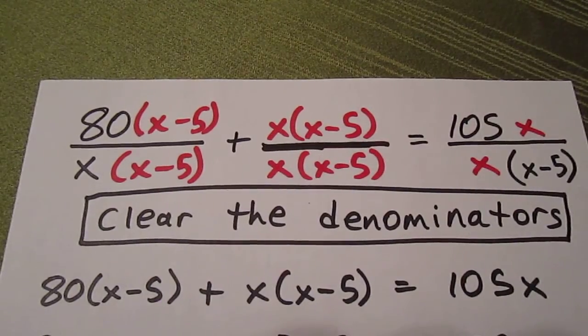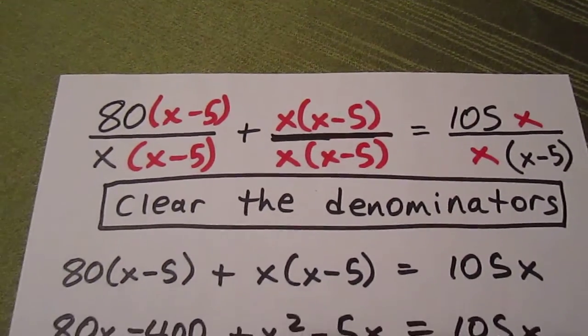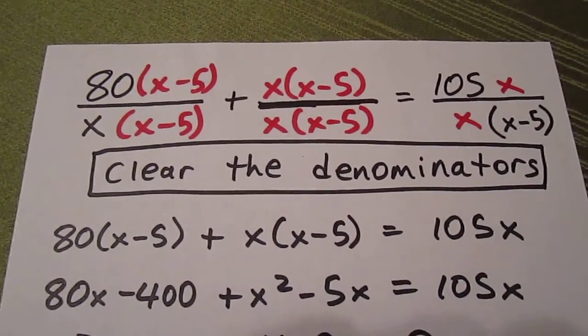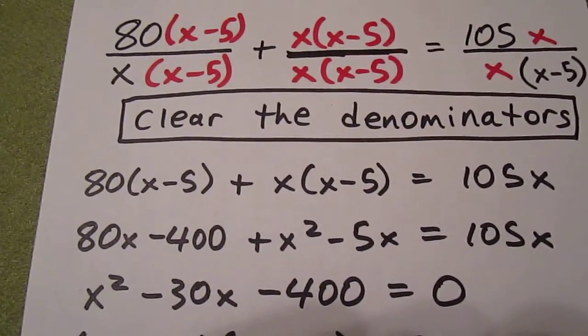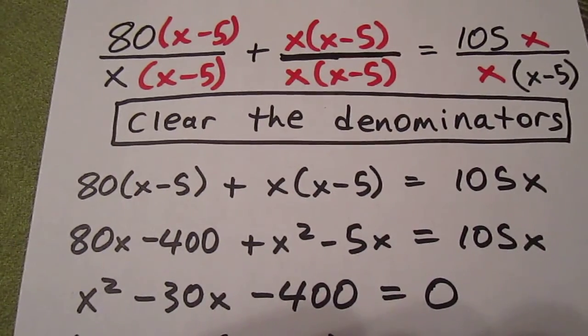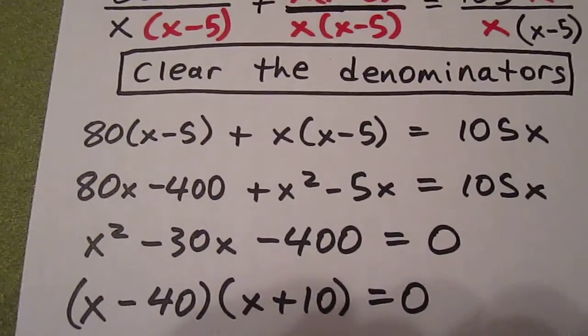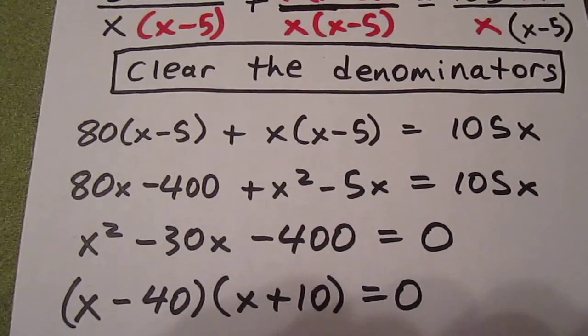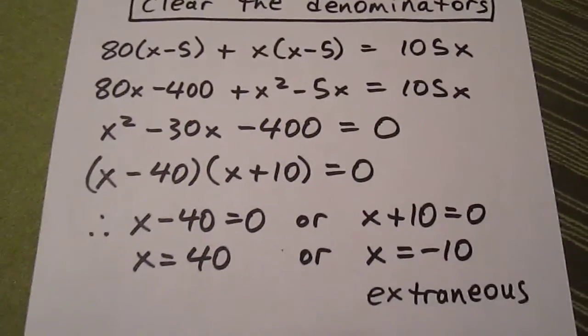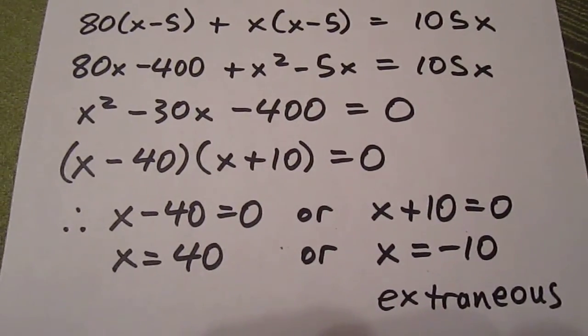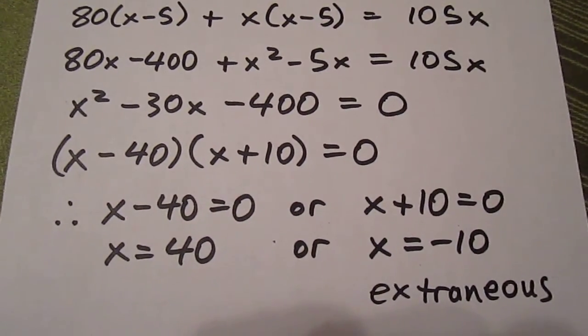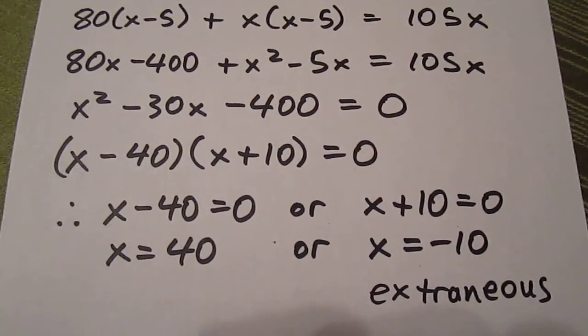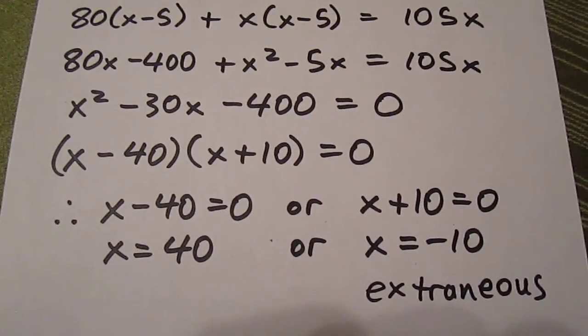We now have a quadratic. We expand, and then we know that if we want to be a quadratic hero, we have to set one side to 0. We factor that, and we get X minus 40 times X plus 10 equals 0. We solve this quadratic and get two solutions. X is going to equal 40, or X is going to equal negative 10. But the solution of X equaling negative 10 is extraneous. There can't be negative 10 pens in a box.